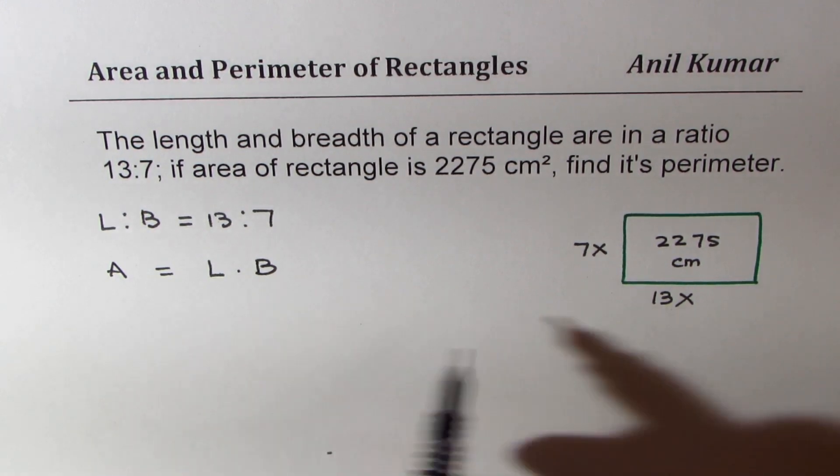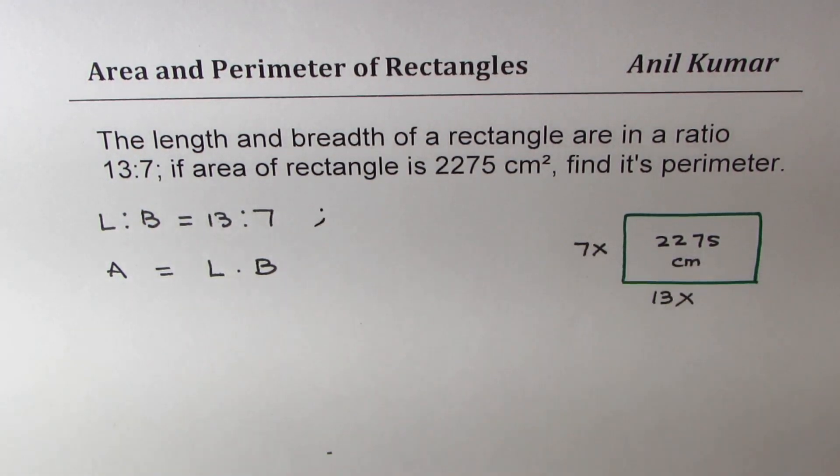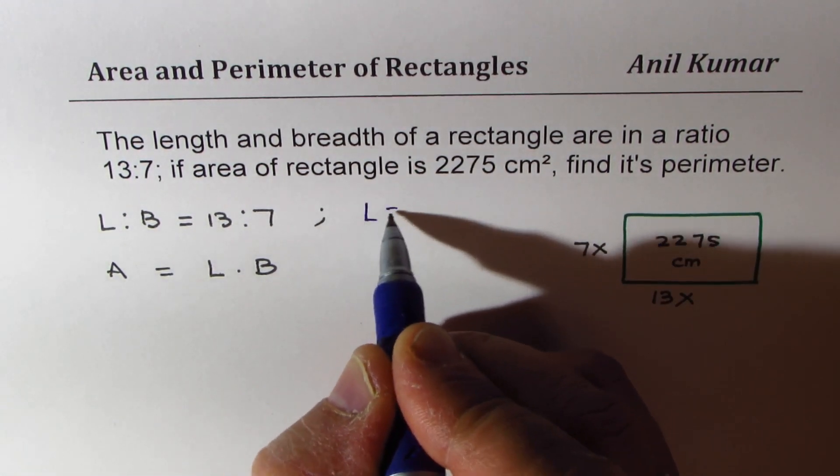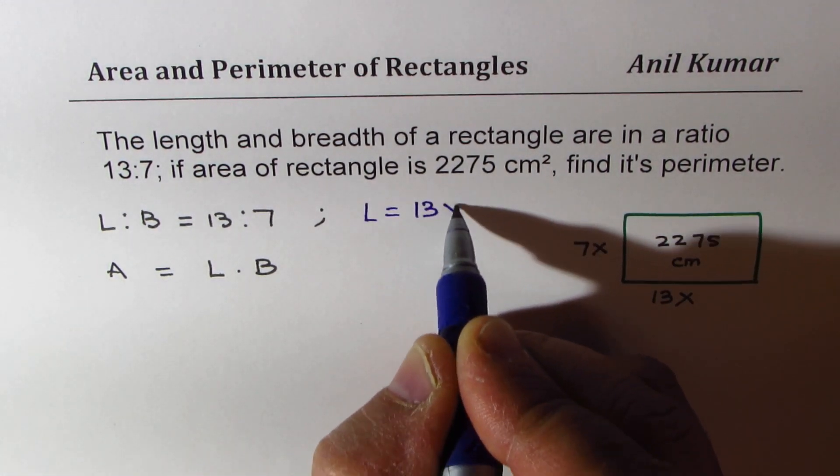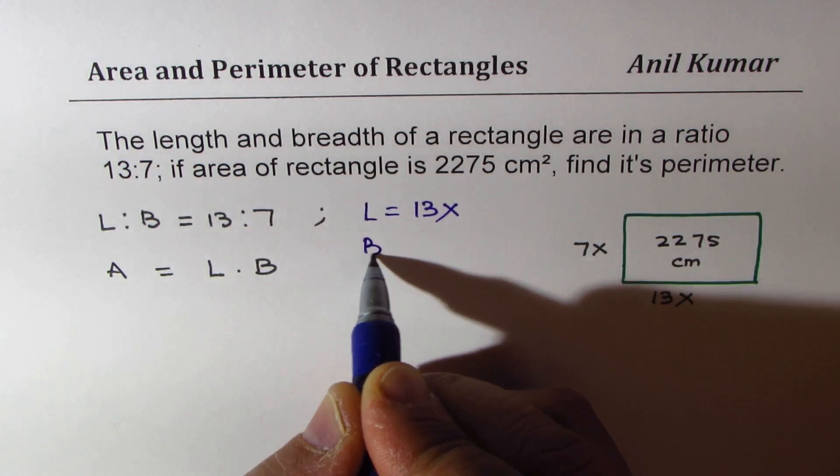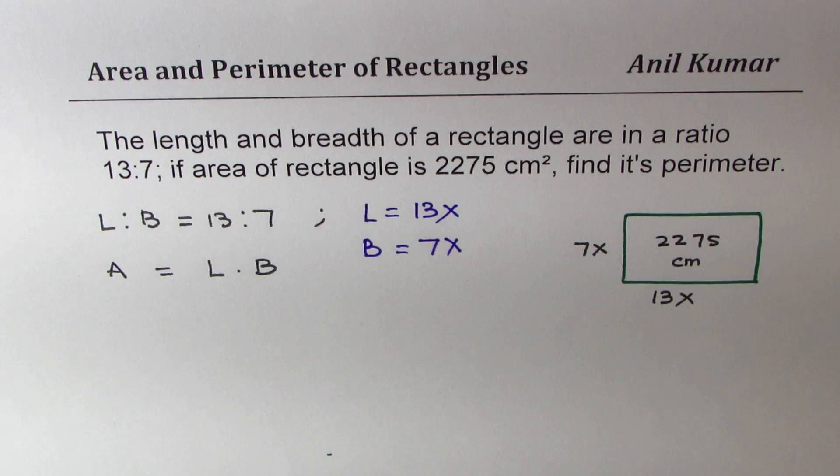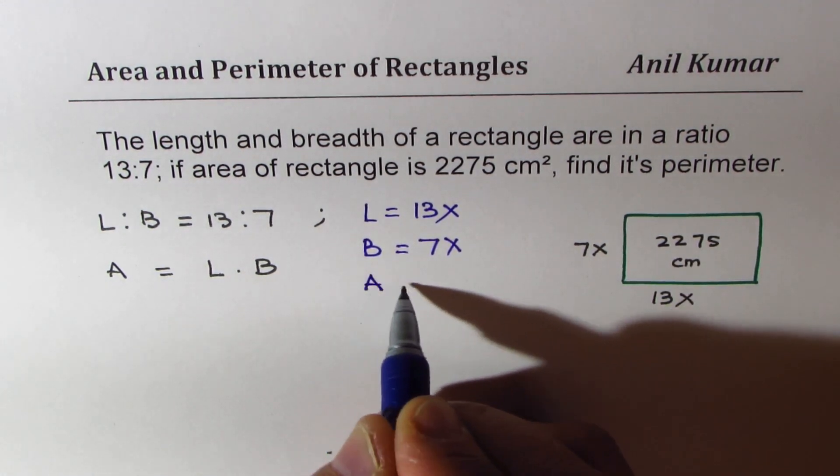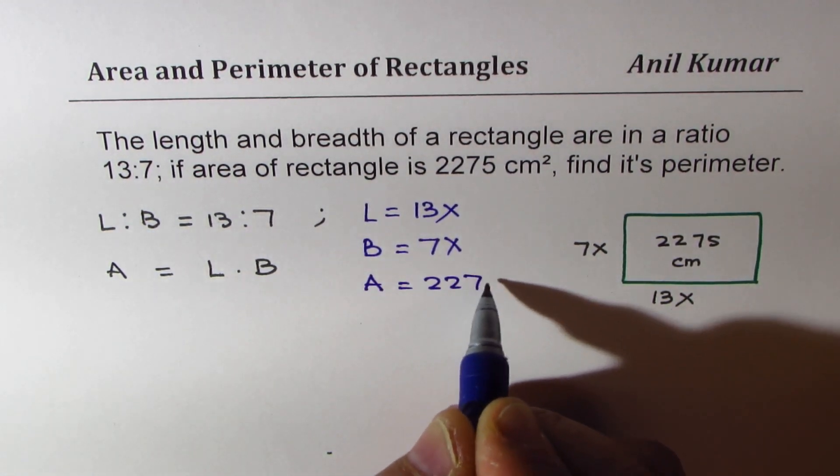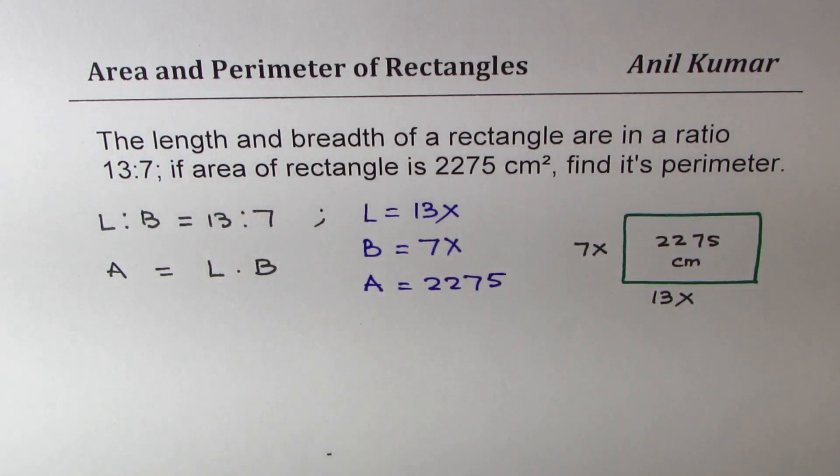Since we are taking length as 13x, we have assumed that length is a multiple of 13, so it is 13x and the breadth is 7x. We'll substitute these values here and we are already given that area is equal to 2275. Units are in centimeter square for area.